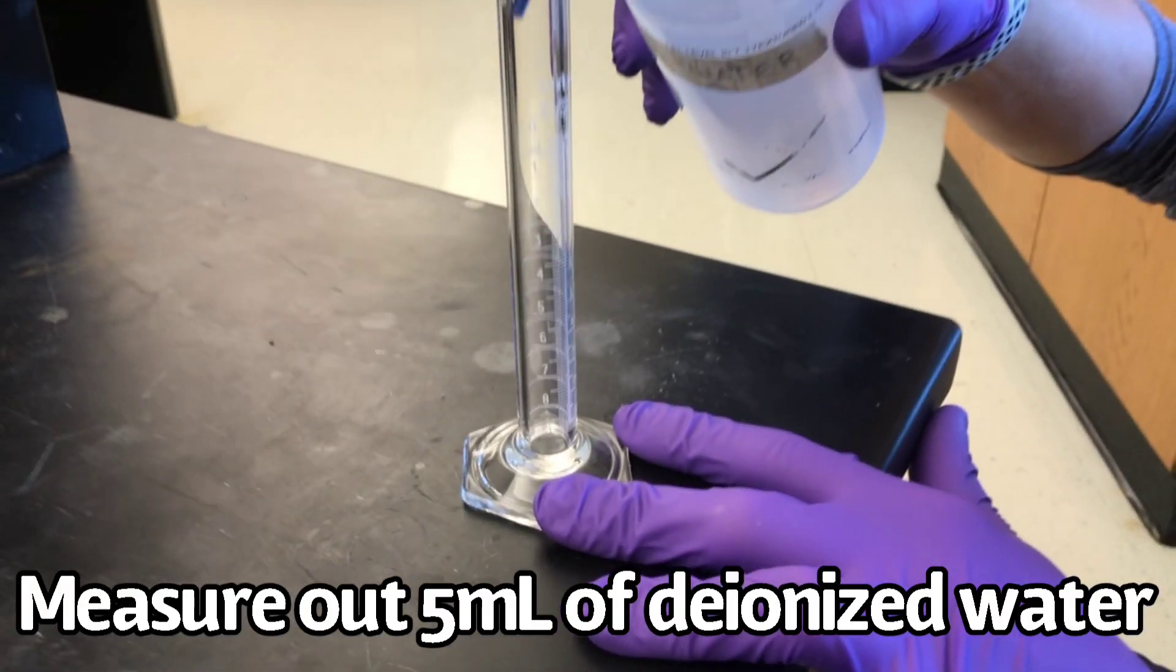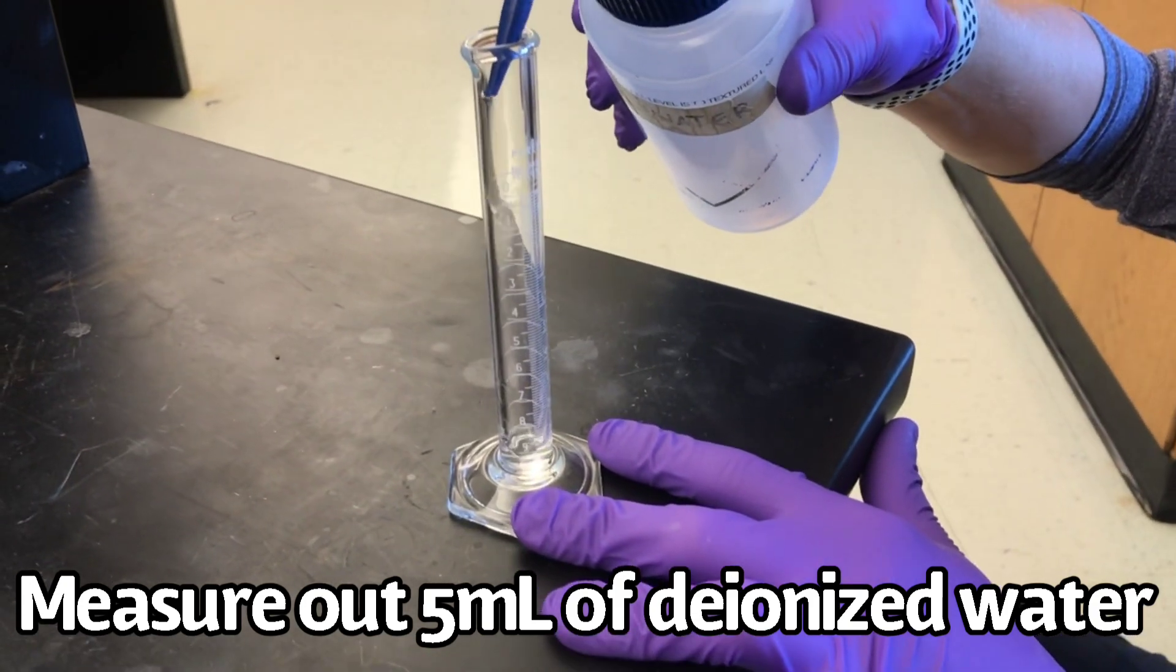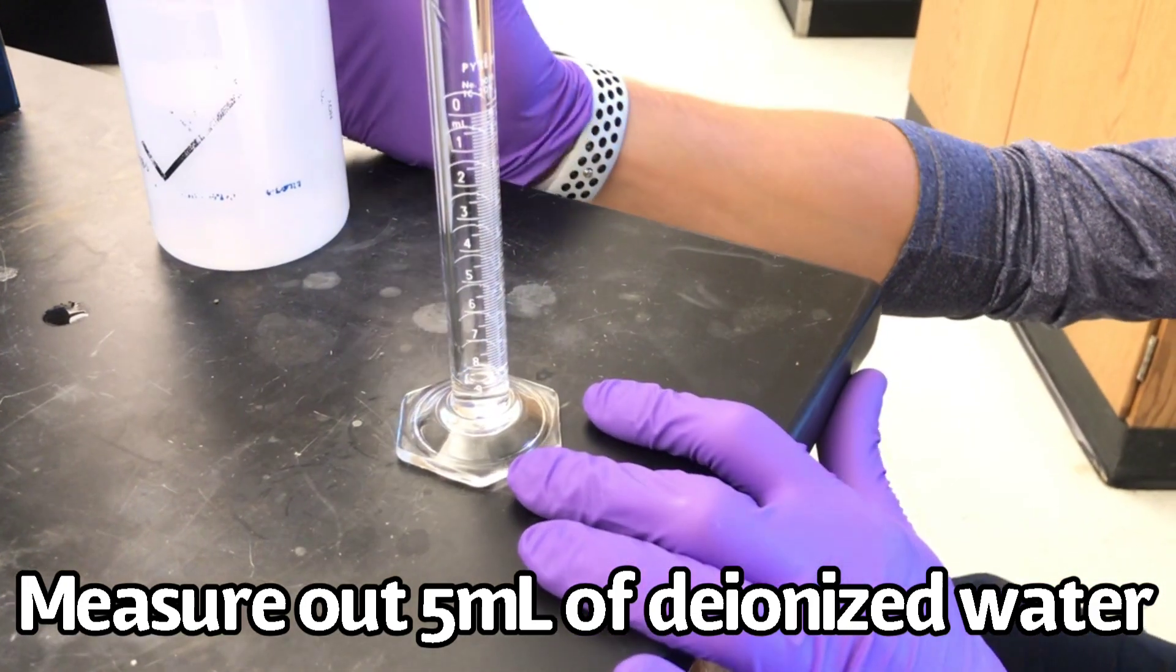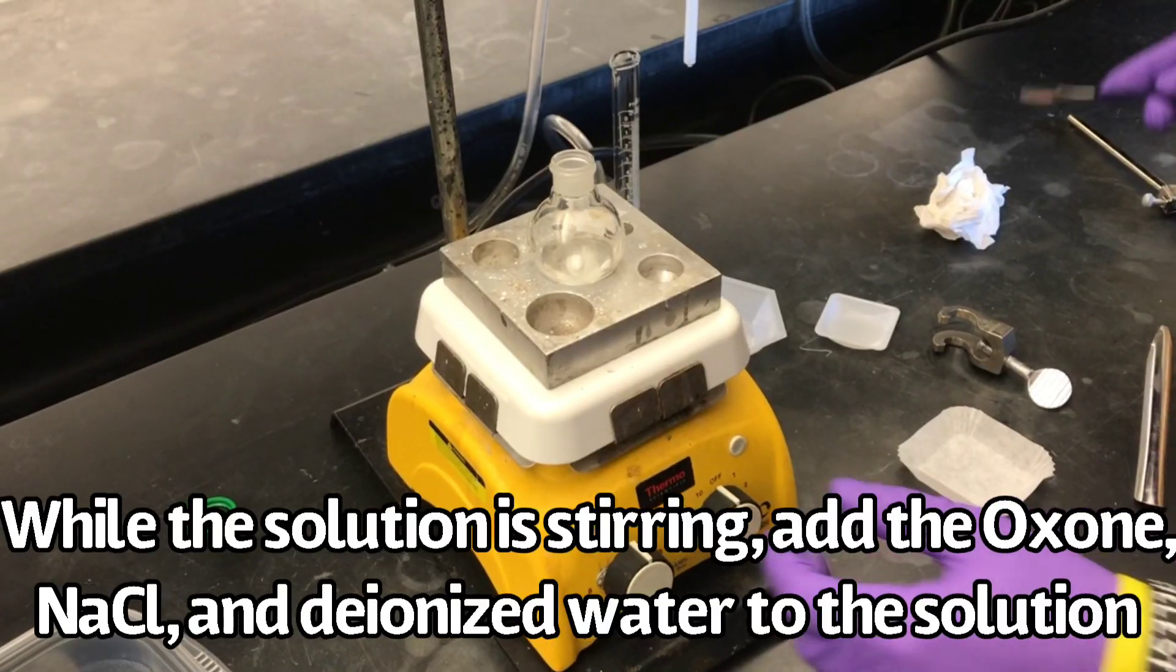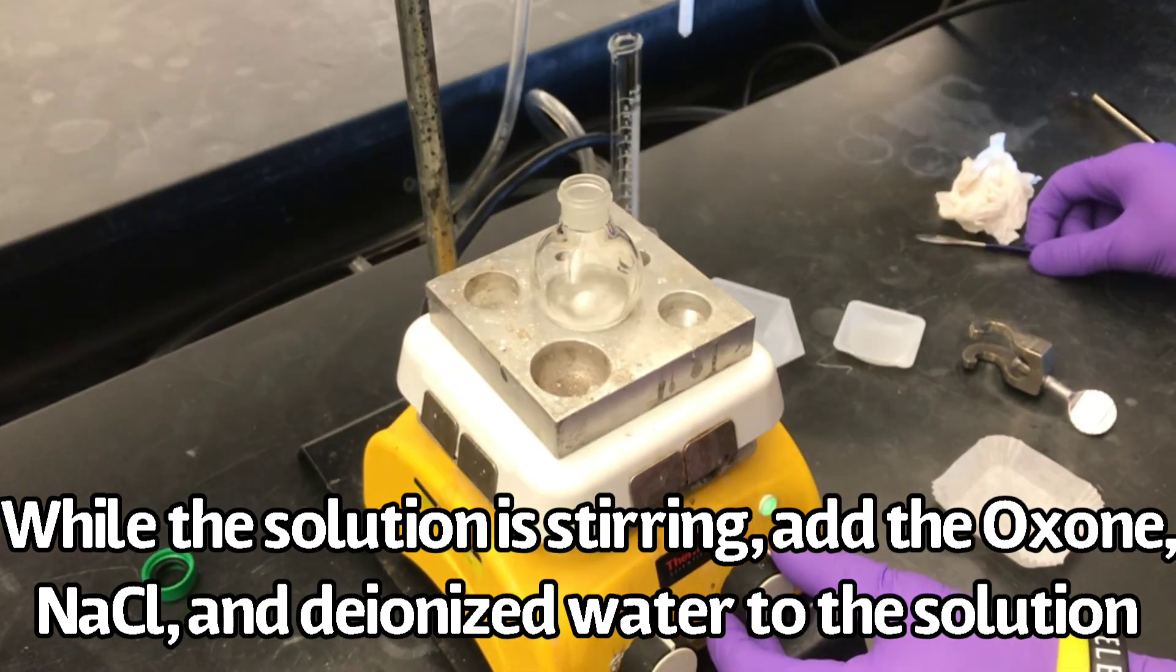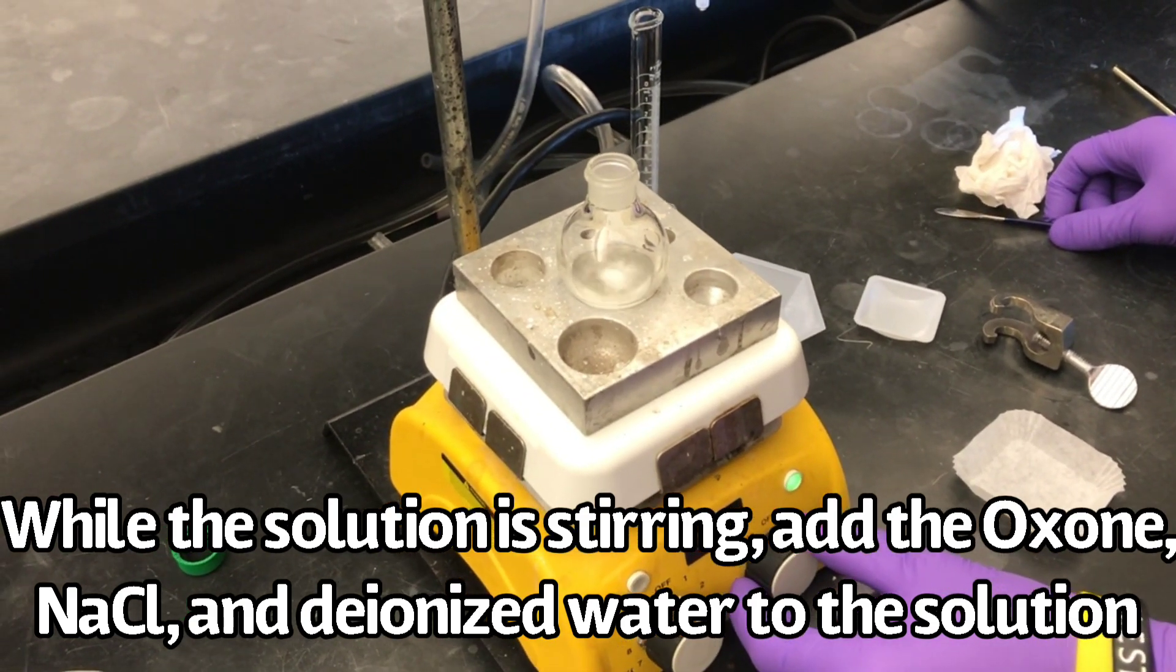Also, measure out 5 milliliters of deionized water. While the solution is stirring, add the oxone, sodium chloride, and deionized water to the solution.